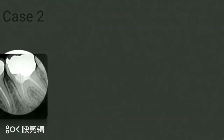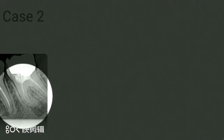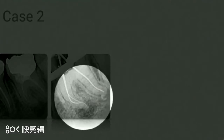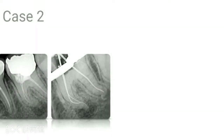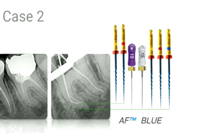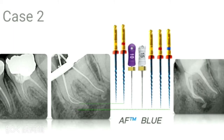In this case we have two separated instruments — I think these files were intentionally broken by the previous dentist. After removal, we took the working length and found a severely S-shaped curvature, which needed strategic planning for safer shaping. The sequence was: 20 and 25 taper 4, then 10 and 15 to working length, followed by 20, 25, and 30 for apical finishing. This was the final radiograph.